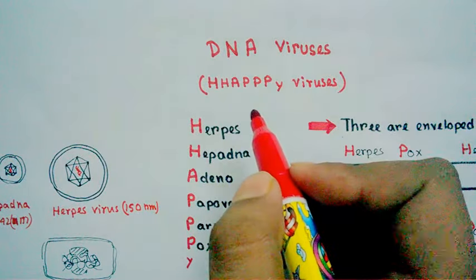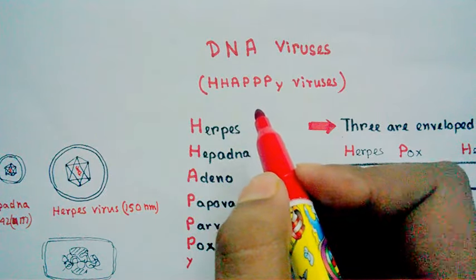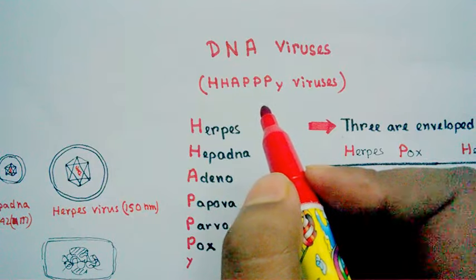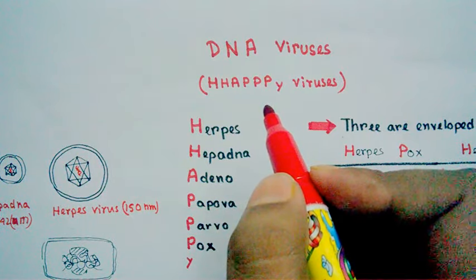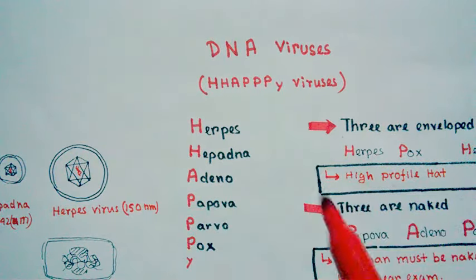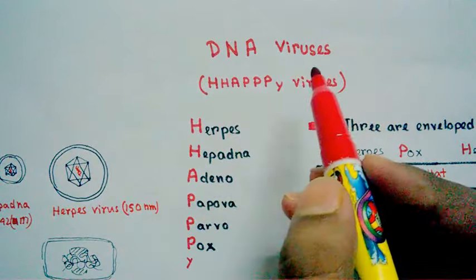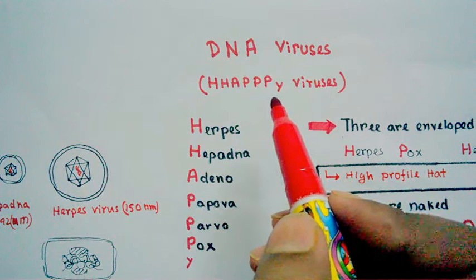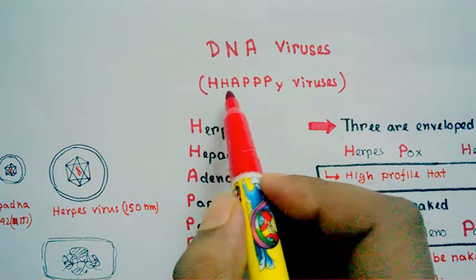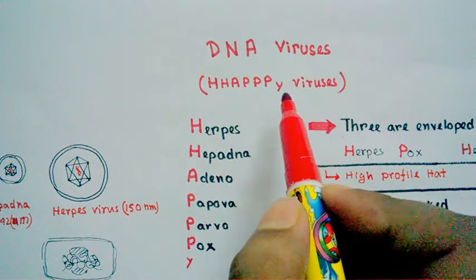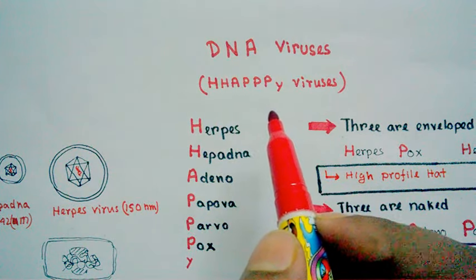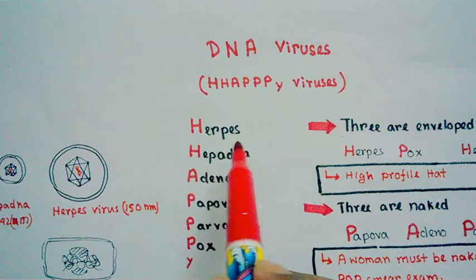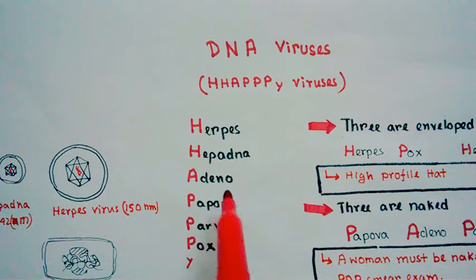In this video, I'm going to share a cool mnemonic to remember the structures and names of the DNA viruses. This mnemonic states that our DNA viruses are happy viruses, and we spell happy in a different way: HHAPPPY. Happy means herpes, hepadna, adeno...